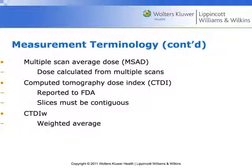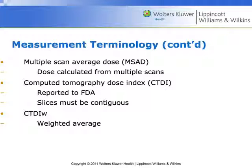This is why we drive toward a CTDI volumetric. Before getting into that, let's talk about the MSAD — the multiple scan average dose. It takes into account the tailing effect along the Z-axis from one slice to another, calculated over a series of multiple scans. When physicists do annual QC, they insert a pencil ion chamber into a uniform phantom, scan it repeatedly, and come up with an MSAD — the volumetric dose resulting from those multiple scans.